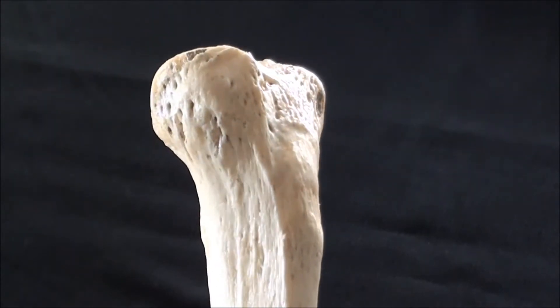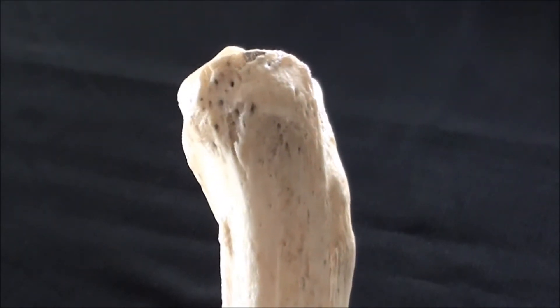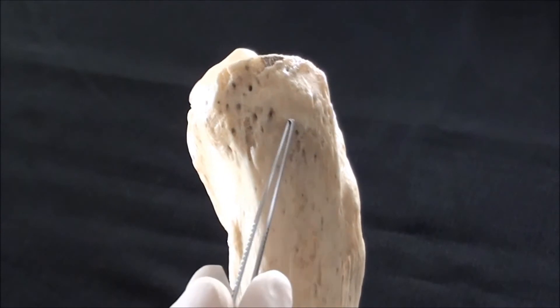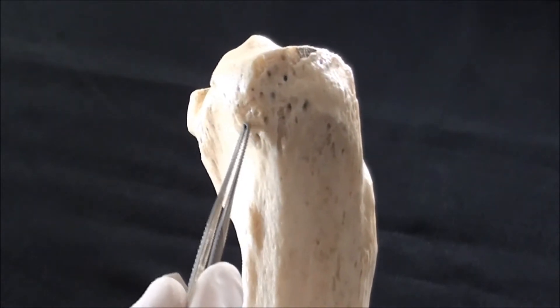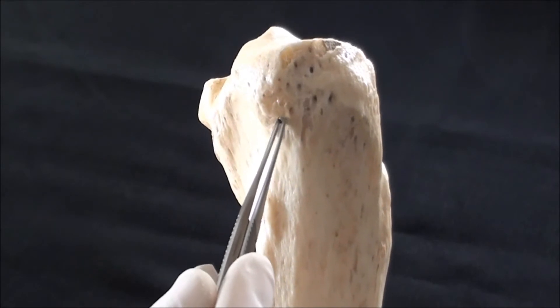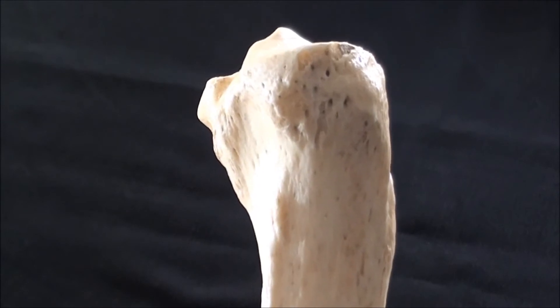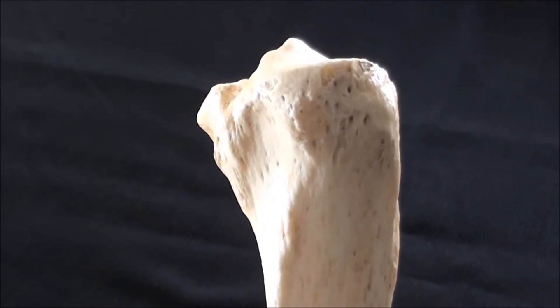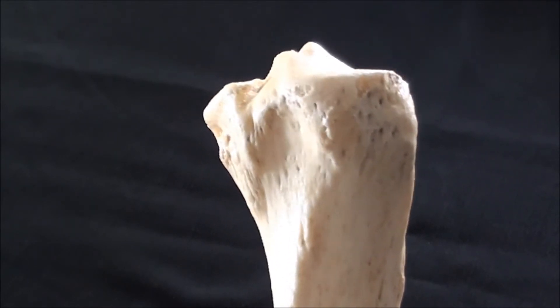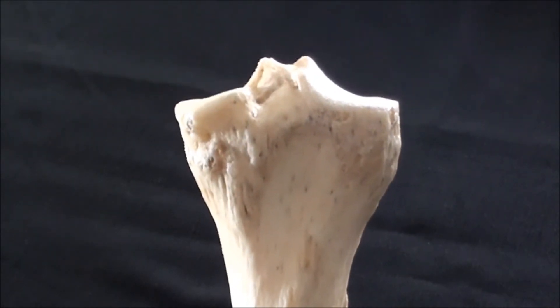As we rotate the bone in a clockwise direction, we're now seeing from a lateral perspective the lateral condyle of the tibia, and within the posterior lateral aspect there will be a small flat articular surface facet that will make a joint with the proximal part of the fibula, better known as the fibular head.